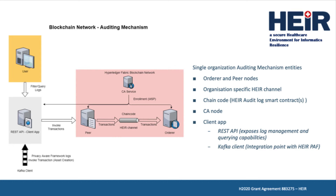The HAIR channel is the logical channel where the chain code is implemented and logs reside. The CA service is responsible for user management aspects such as user certificates, user registration, user enrollment, and user revocation. The auditing mechanism client app acts as an entry point to the underlying blockchain network, offering REST API and Kafka connectivity. While the REST API offers filtering capabilities, the Kafka interface receives the privacy-aware framework-generated logs, subsequently invoking the storage functionality of the deployed smart contract.